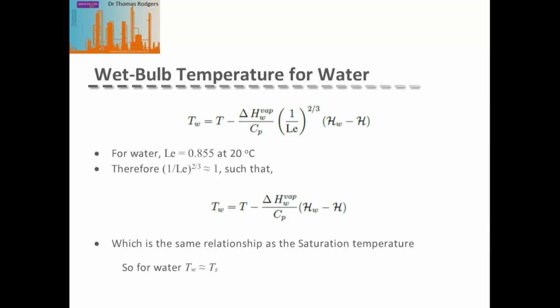For water at about 20°C, the Lewis number is 0.855, which means 1 over the Lewis number to the power of two-thirds is approximately 1. Therefore, the wet bulb temperature for water depends only on the convective gas temperature, the enthalpy of vaporization, the specific heat capacity, the saturation humidity, and the convective gas humidity — the same relationship obtained from a material balance around the saturation temperature. So for water, the wet bulb temperature is very similar to the adiabatic saturation temperature, making the latter a good approximation when wet bulb data is unavailable.